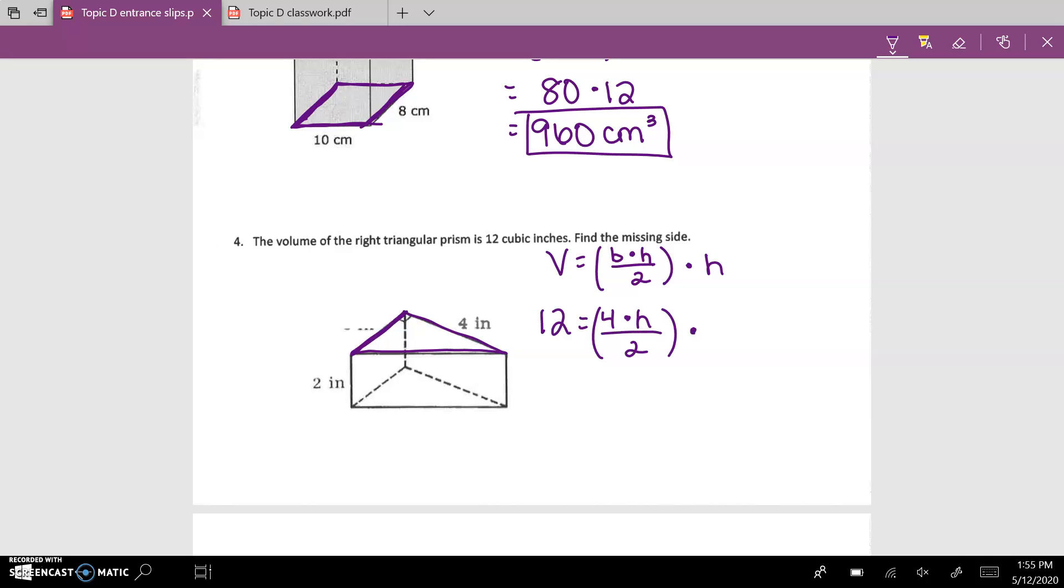We do know the height of the entire shape, which is 2. So now, you could see that these cancel, so you end up with 12 equals 4 times h. To undo that, you would divide by 4.